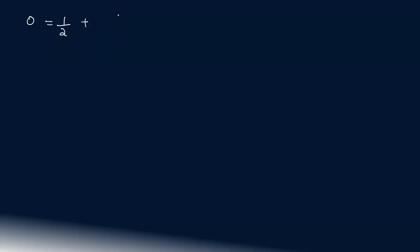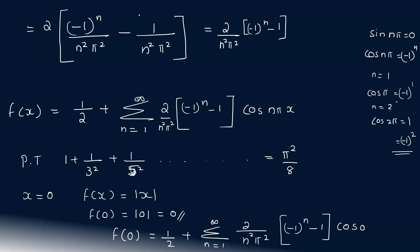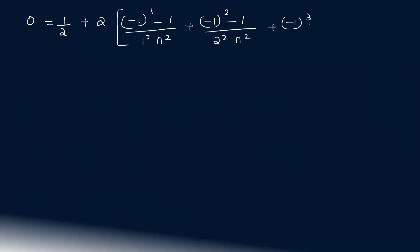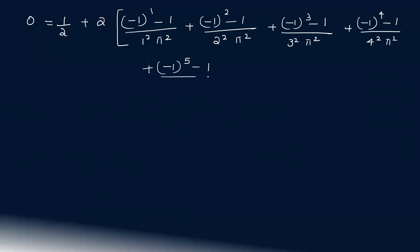Since cos 0 equals 1, we have 0 equals 1 by 2 plus summation. Expanding: n equals 1 gives minus 1 raised to 0 by 1 squared pi squared; n equals 2 gives minus 1 raised to 1 by 2 squared pi squared; n equals 3 gives minus 1 raised to 2 by 3 squared pi squared; n equals 4 gives minus 1 raised to 3 by 4 squared pi squared; n equals 5 gives minus 1 raised to 4 by 5 squared pi squared.